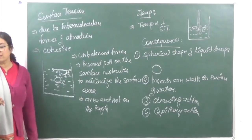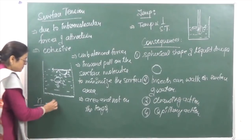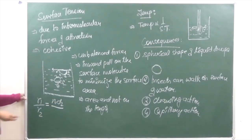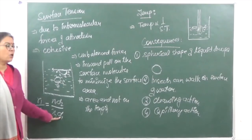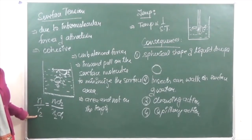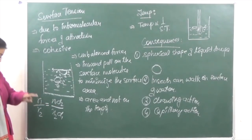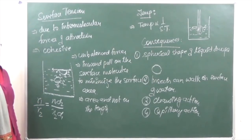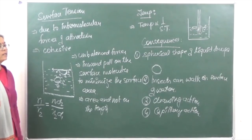Surface tension can be measured using the formula: γ₁/γ₂ = (n₁ × d₂)/(n₂ × d₁), where γ₁ is the surface tension of water, d₁ is the density of water, n₁ is the number of drops of water, γ₂ is the surface tension of the liquid, d₂ is the density of the liquid, and n₂ is the number of drops of the liquid. If we know the surface tension of water and the density of the liquid, we can calculate the surface tension of the liquid.